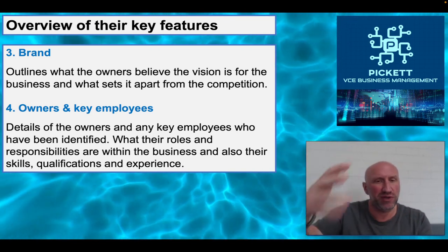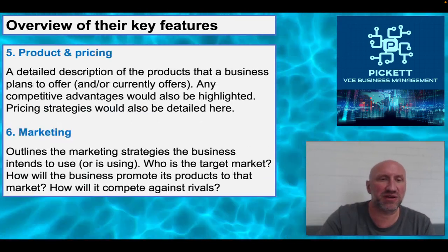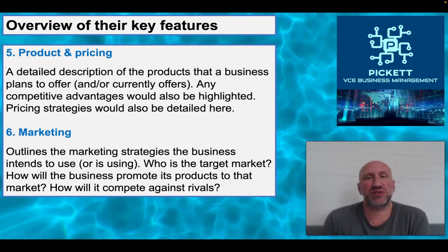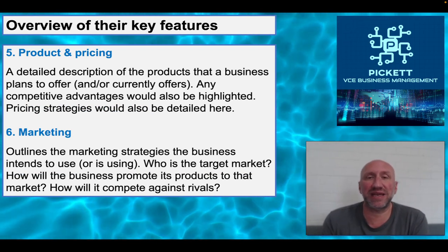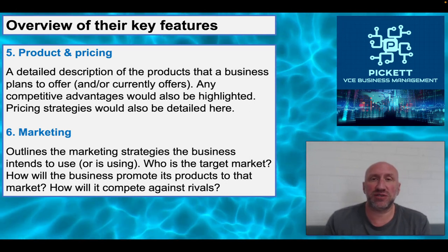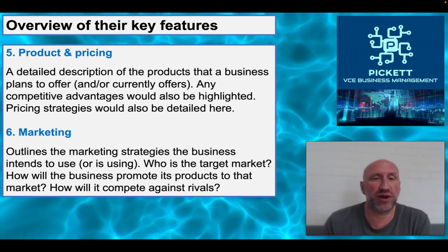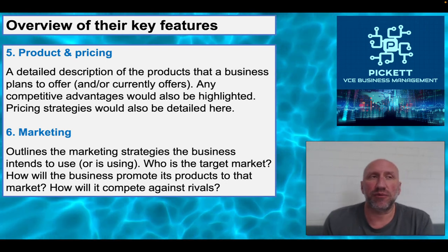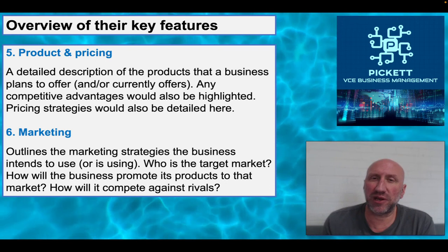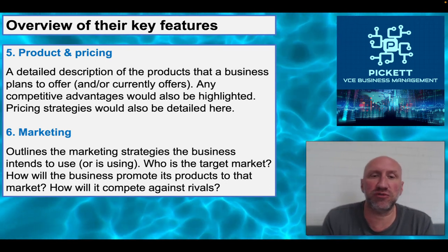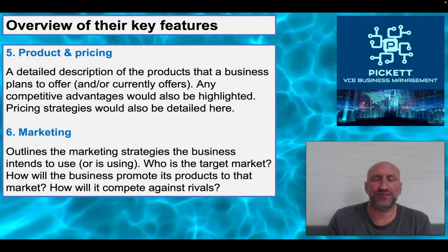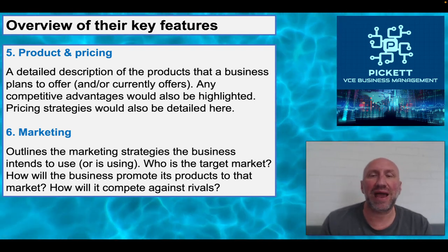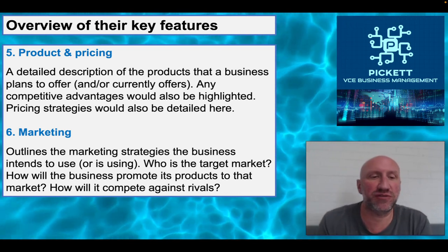Fourth, information on the products or services — a bit more detail about what you're actually going to be selling, any competitive advantages you can offer through those products and services, and some detail around pricing strategies. Pricing strategies is something we look at more when we cover marketing in the second outcome of Unit 2, where we explore the different ways of working out how much to sell products or services for.